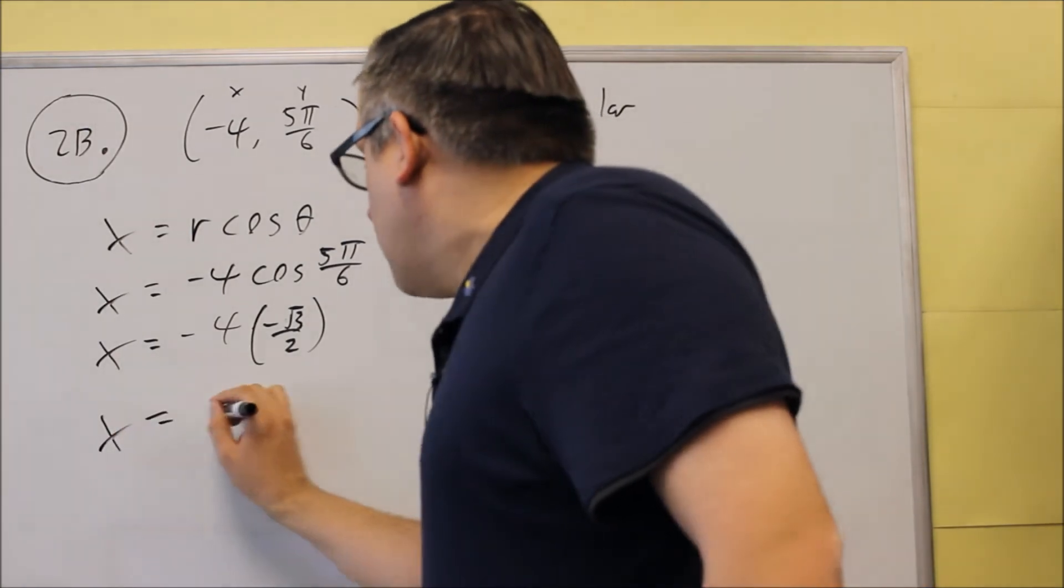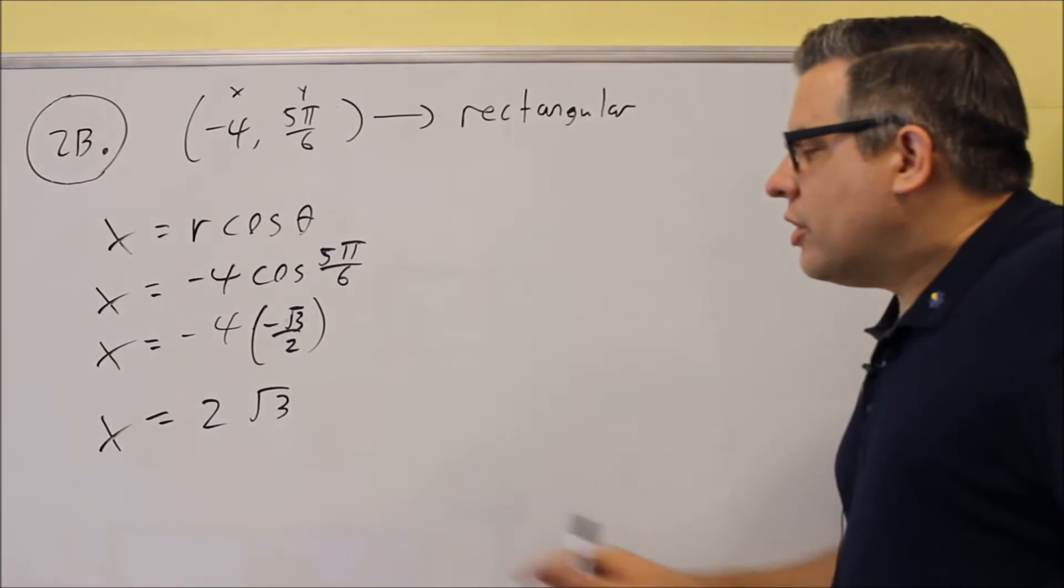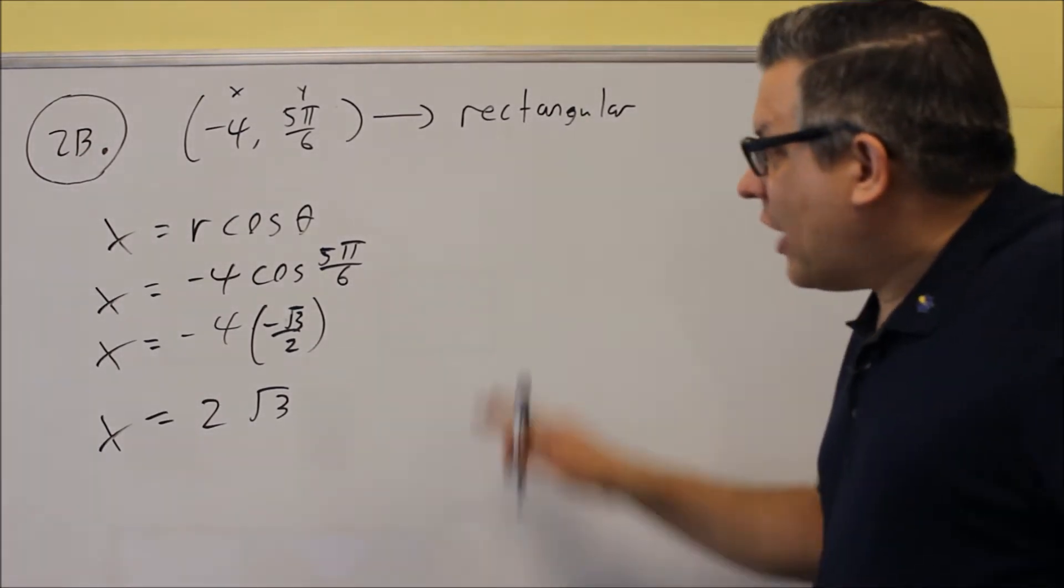And then when you multiply it out, you're going to get negatives cancel. 2 square root of 3 would be the x value. But now we need the y value.